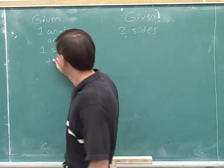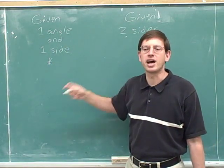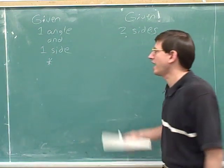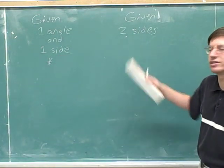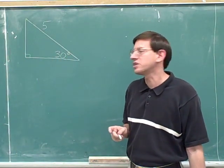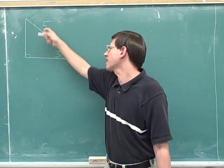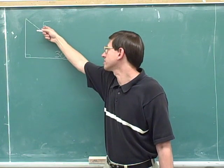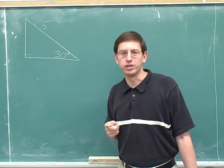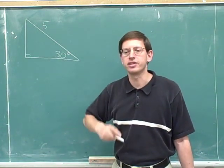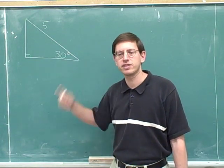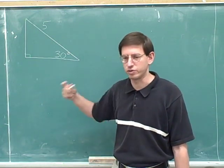We're going to start with problems where we're given one angle and one side, and we'll see that we can figure out everything else about that triangle. Here's a right triangle — I've given you one of the sides, which is 5, and one of the angles, which is 30 degrees. Your job is to figure out all the other sides and angles. You can pause the video and give that a shot, but don't get frustrated if you get stuck, since we haven't gone over the method yet.